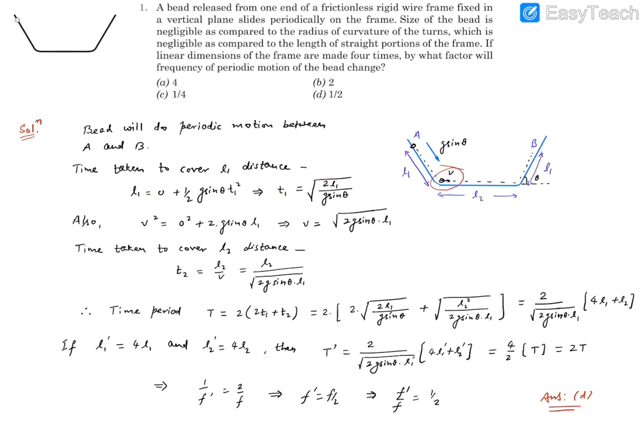Then we need to find this v velocity. We can say third equation of constant acceleration motion: v² = u² + 2as. u is 0, a is g sin θ, and distance or displacement being covered is l₁. So from here we can find the velocity.